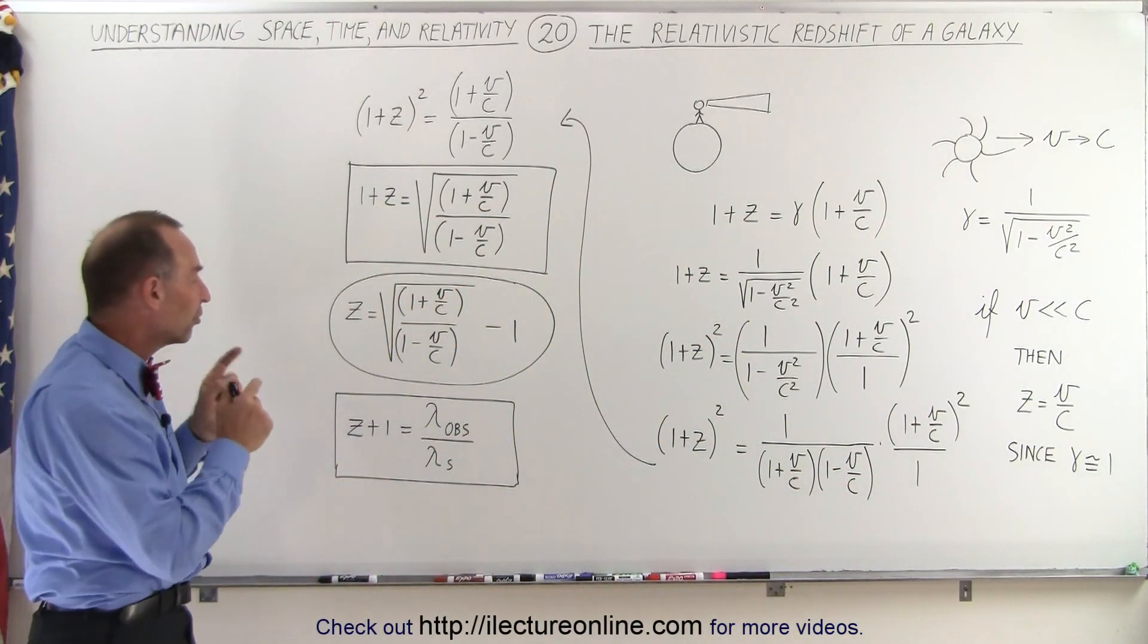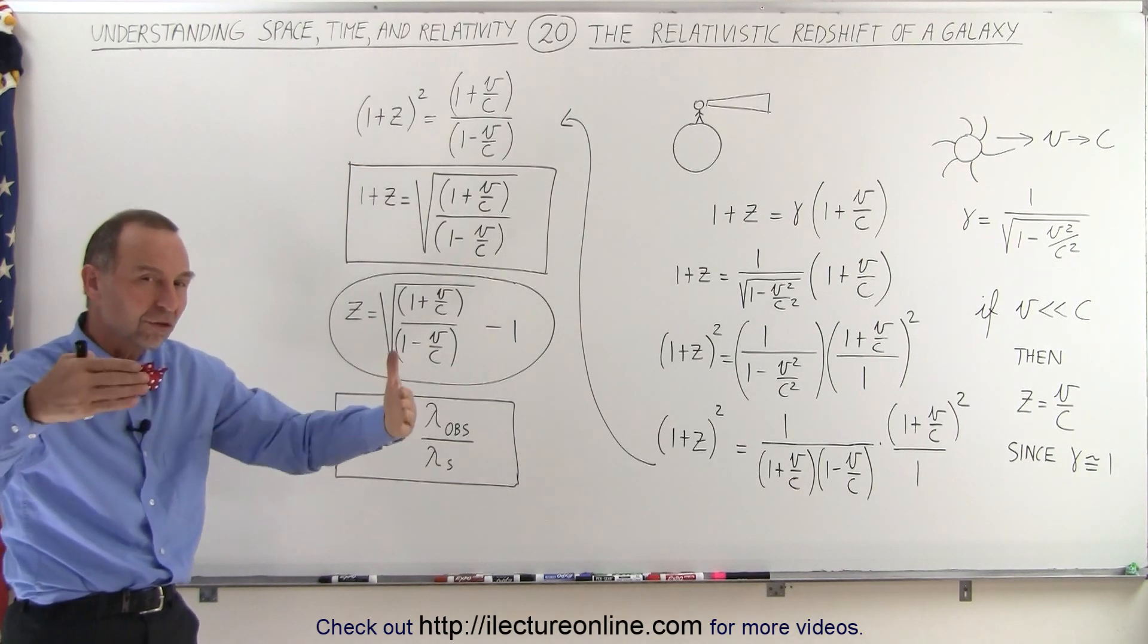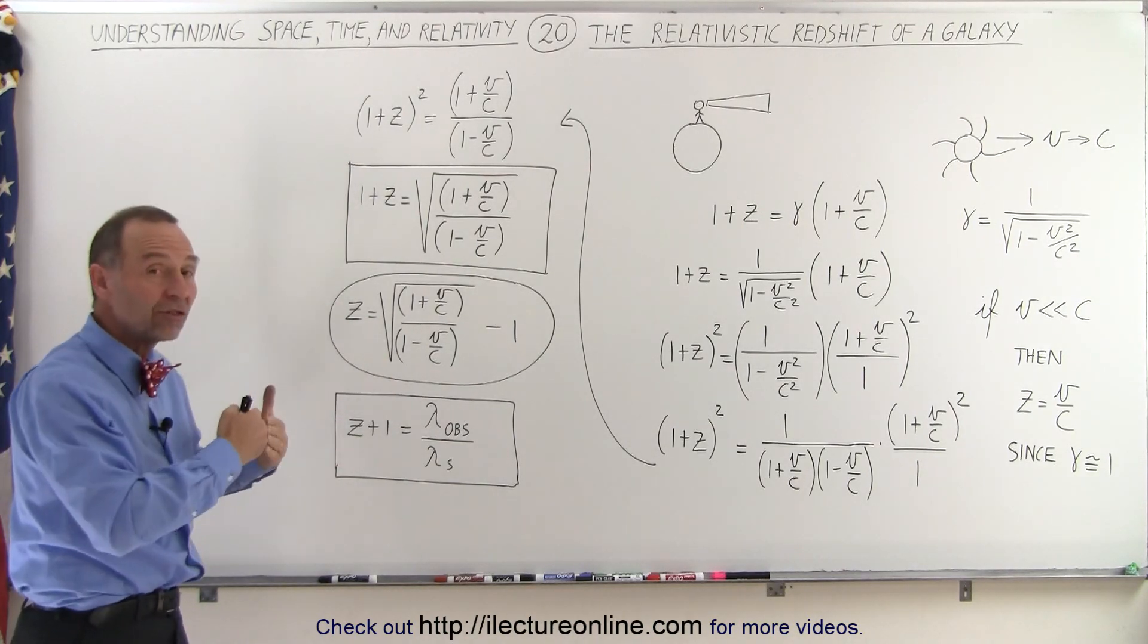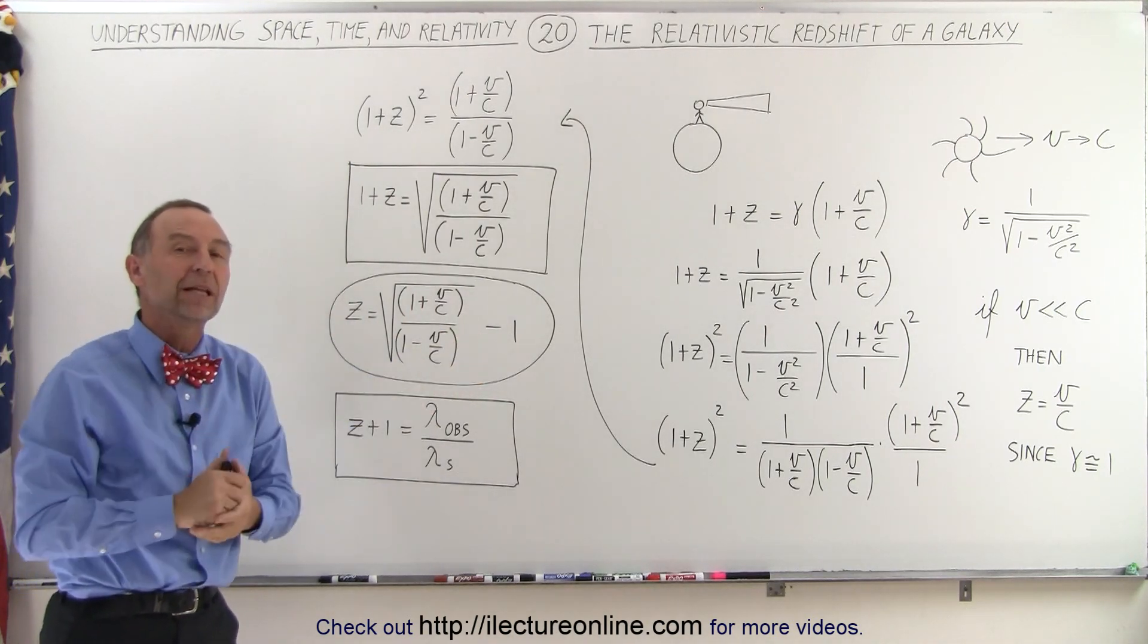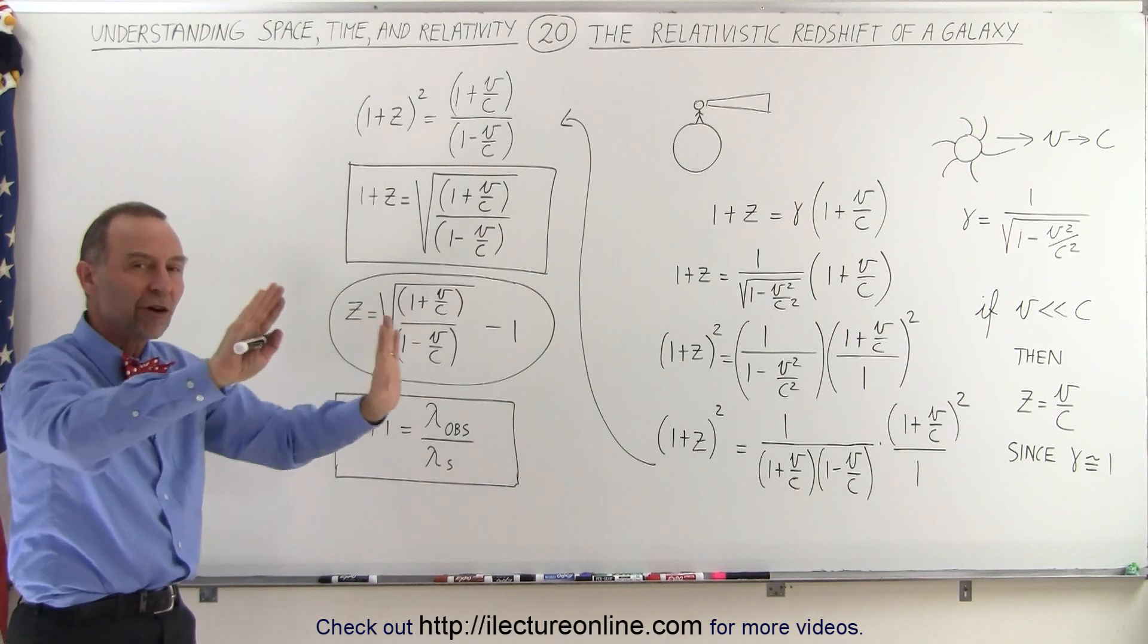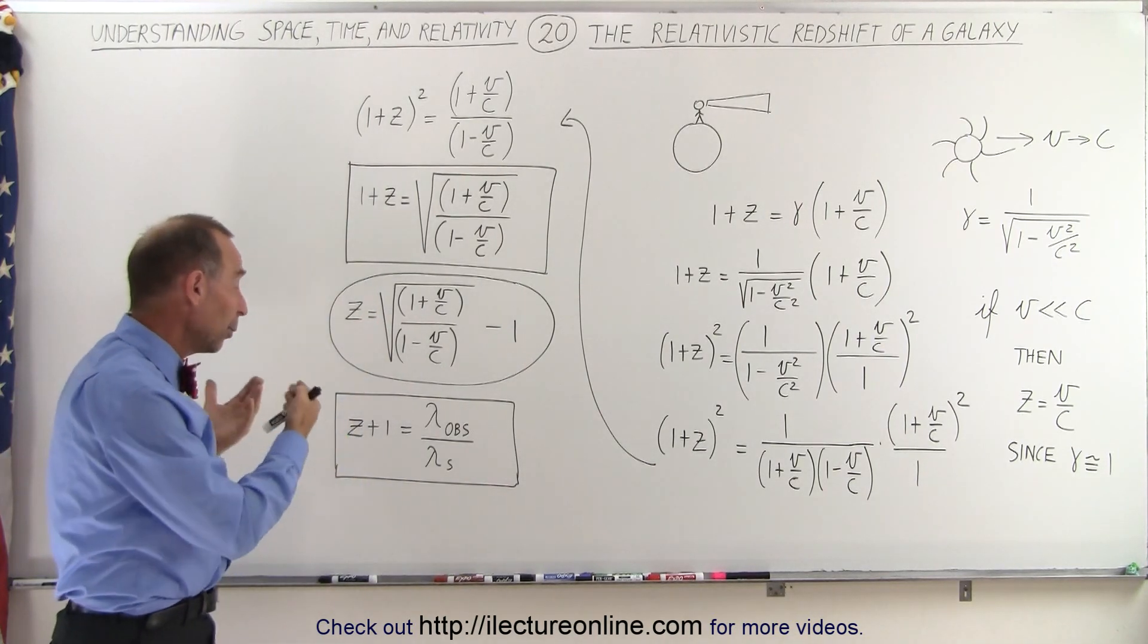In the next video, we'll see how z affects the way we look at galaxy recession, and what z looks like for galaxies very far away at the fringes of the visible universe.